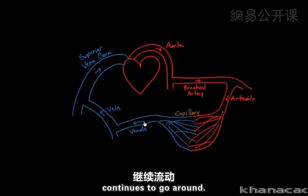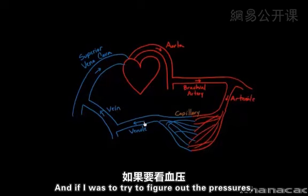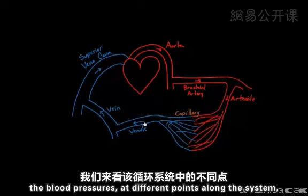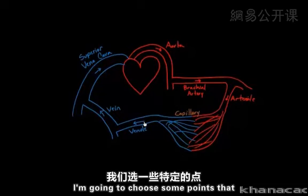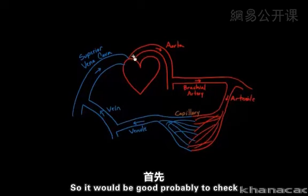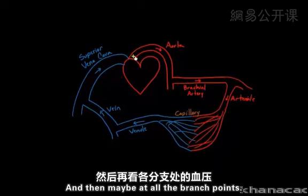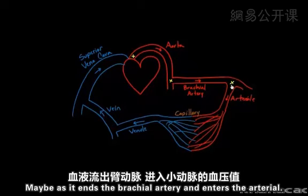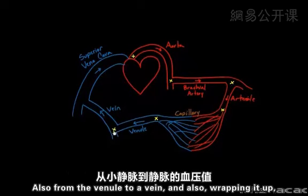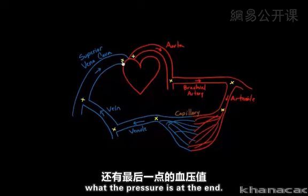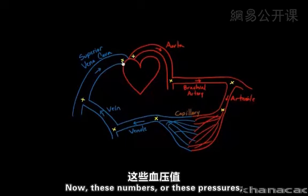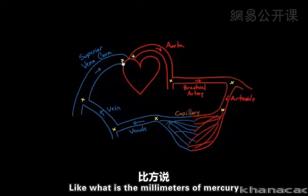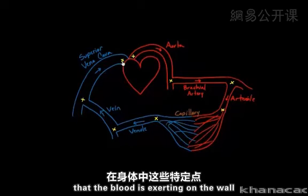The blood flow through this half continues around the circuit. If I were to figure out the blood pressures at different points along this system, I'd choose some interesting ones to check: at the beginning, at the branch points — from aorta to brachial artery, entering the arteriole, the beginning and end of the capillaries, from the venule to a vein, and at the very end.